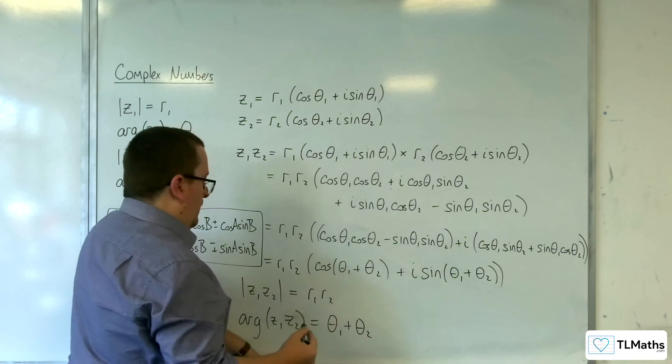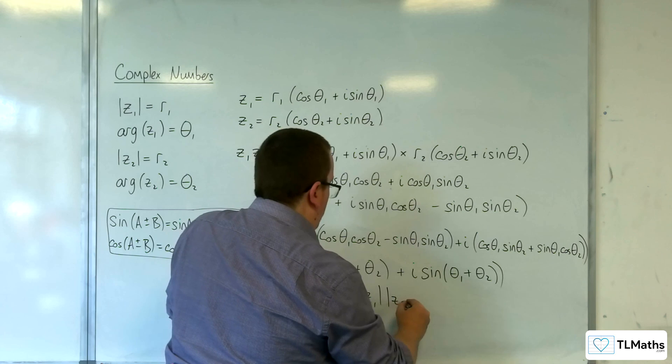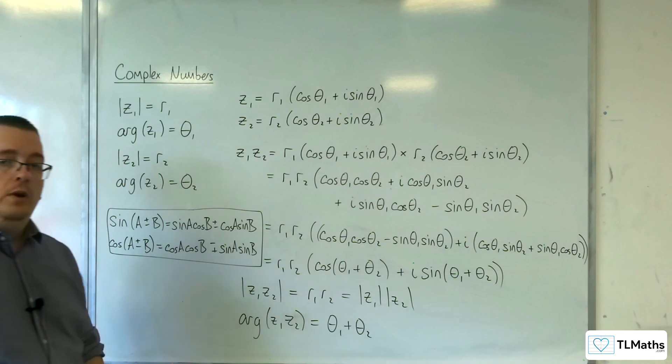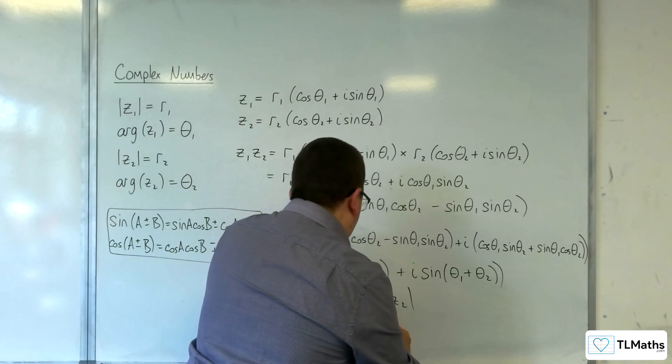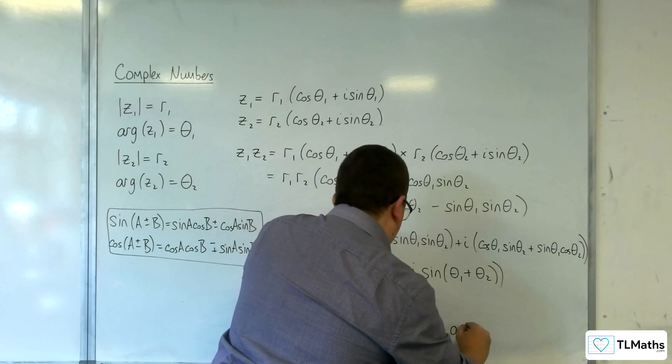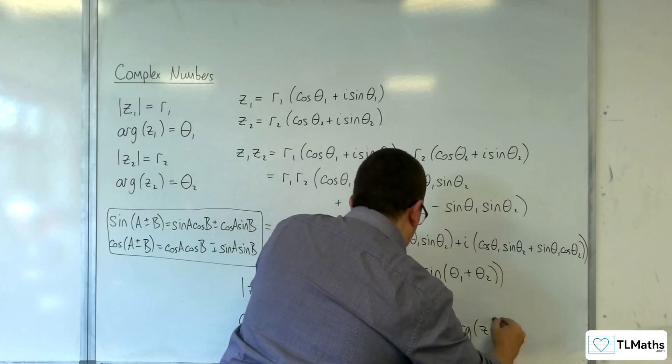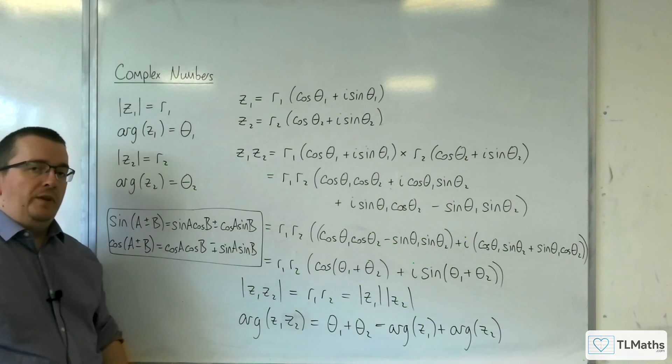So R1 times R2 is just the modulus of Z1 times the modulus of Z2, so you multiply the two moduli together. And here you've got the addition of the two arguments, and so that proves the result that we saw in the previous video.